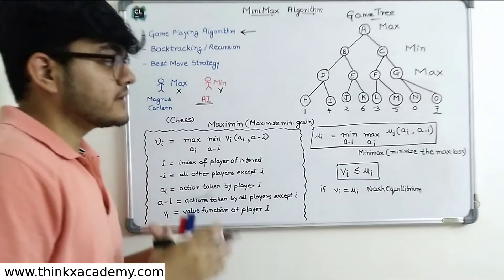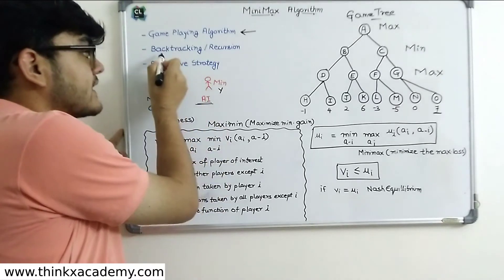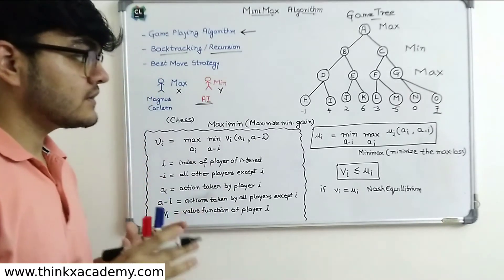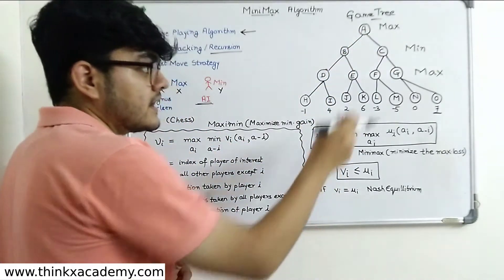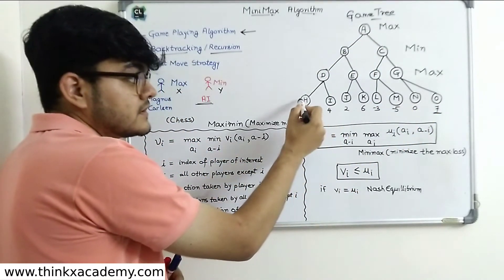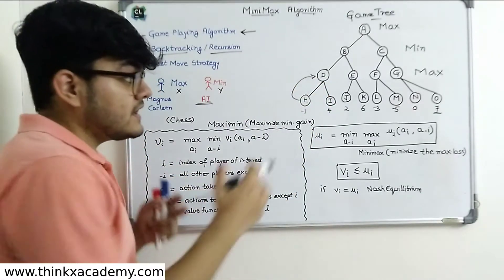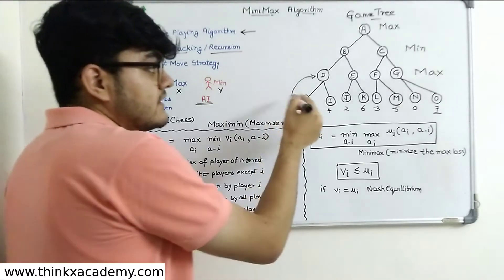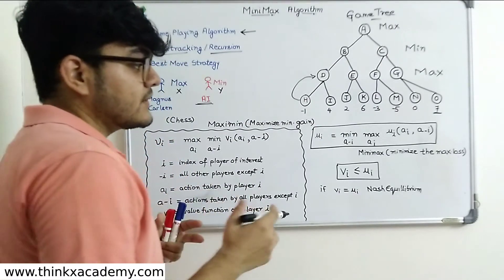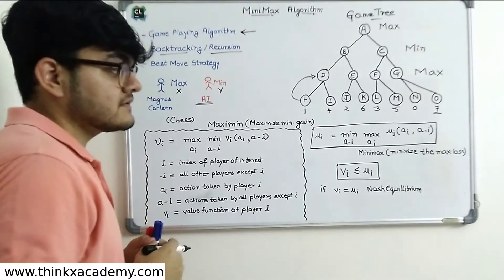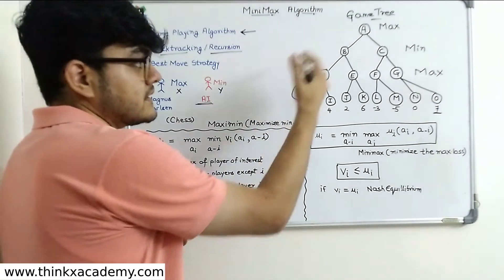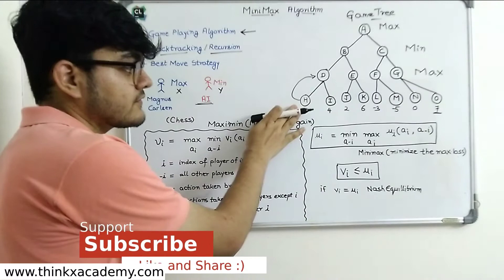One important point about this algorithm is that it is a backtracking or recursive algorithm. The backtracking algorithm moves from the root node all the way to the leaf nodes, and then goes back again. When going back, we say they are backtracking, and during backtracking they calculate the values of min and max. This helps the AI agent decide which path is best according to the moves made by Magnus Carlsen. Since the algorithm is going to backtrack, we start from the leaf nodes.